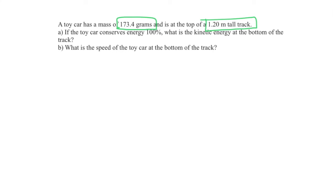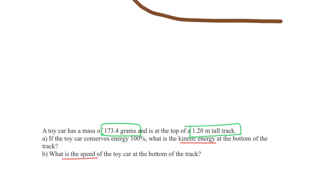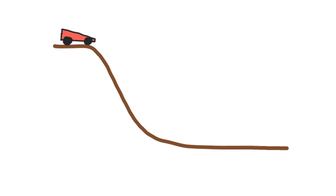If the car conserves energy 100%, what is the kinetic energy at the bottom of the track? Then we're going to calculate the speed of the toy car at the bottom of the track.